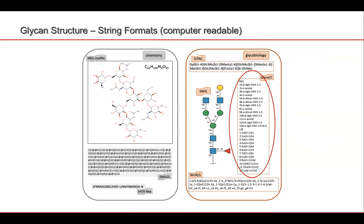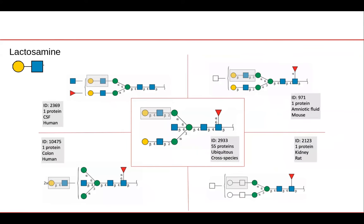The structure displayed here is ideal in that all topology and sequence information has been solved, so you can see all the linkages. However, a more realistic view of solved glycan structures shows structures with the same composition but different levels of sequence and topology information, depending on how they were solved. If NMR is used, we have a very high degree of resolution, all the way down to mass spectrometry or HPLC and monosaccharide composition analysis, which really only gives you the composition.